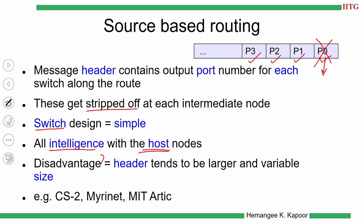The disadvantage of source-based routing is that the header becomes very long if the destination is very far. The header size is variable, and variability makes hardware management difficult because fixed-size designs allow for more optimized hardware. It is still a popular design in some systems.